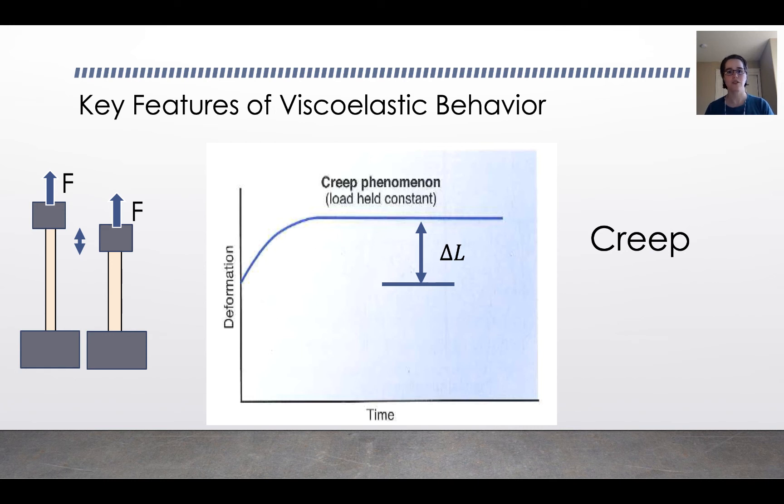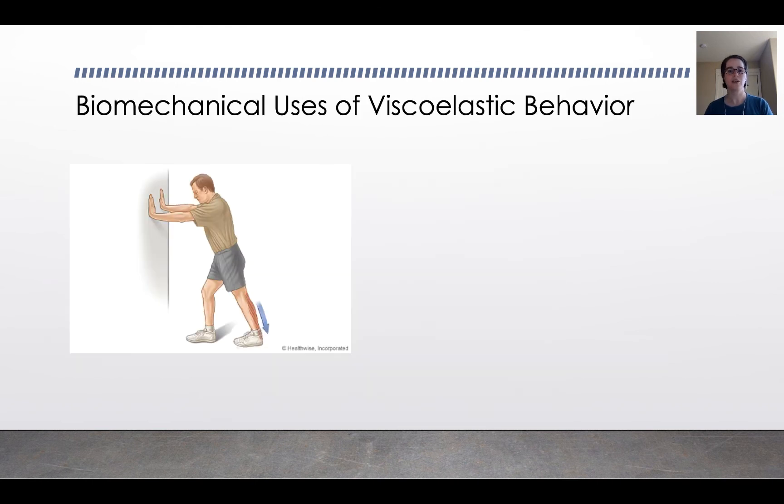So those are the four characteristics of viscoelastic behavior, and tendon and ligament are highly viscoelastic, which actually works to our advantage. For example, here's a calf stretch. Is this an example of hysteresis, load response, load relaxation, or creep response? You said load relaxation, you're right. You're applying a constant deformation, and the amount of force being generated by your muscle is decreasing over time.